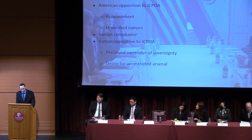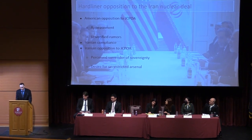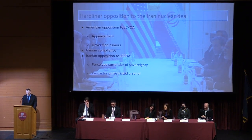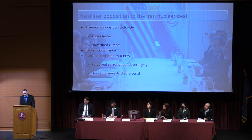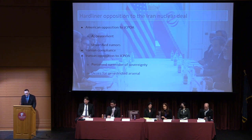Hardliner opposition to the Iran nuclear deal: in America, opposition was based on perceived appeasement and unverified rumors. The deal included a sunset clause which would end restrictions on Iran by 2031. The rumors of non-compliance were unfounded, with the International Atomic Energy Agency and other international inspectors verifying Iran in compliance with the deal. They dismantled thousands of centrifuges used to enrich uranium, kept under the allowed amount of enriched uranium, and welcomed increased surveillance by agency inspectors. Despite this verified compliance by the international community, President Trump withdrew the U.S. from the deal in 2018, at which point Iran returned to their pre-deal activities. Iranian opponents to the deal raised concerns over the loss of sovereignty due to the presence of international inspectors, as well as the desire to grow an arsenal unrestricted by the West.